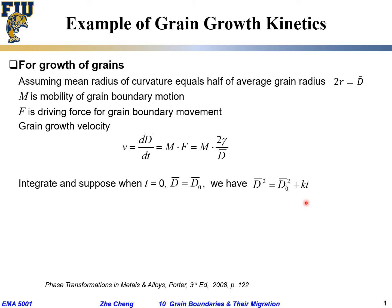What does that mean? That means the growth of the radius or diameter follows a parabolic relationship. D̄ squared equals kt, or similarly, D̄ equals the square root of kt.